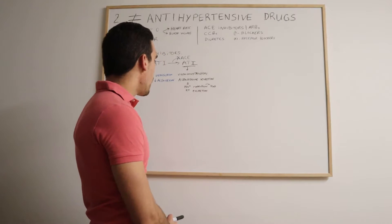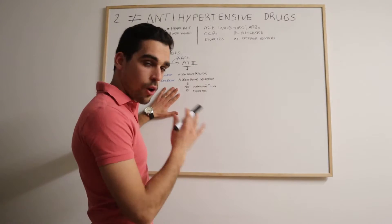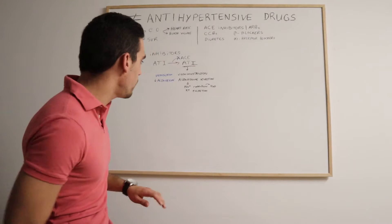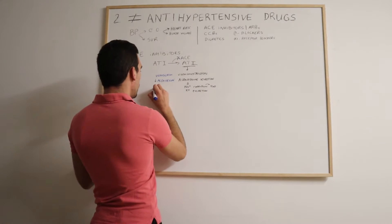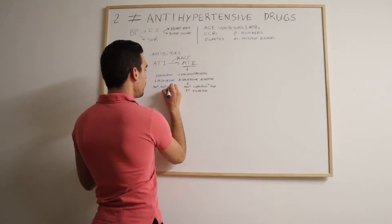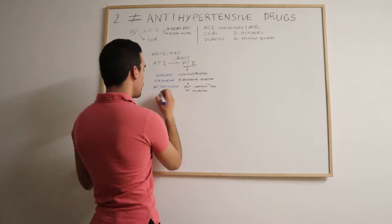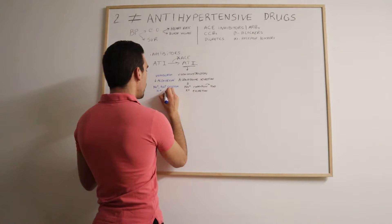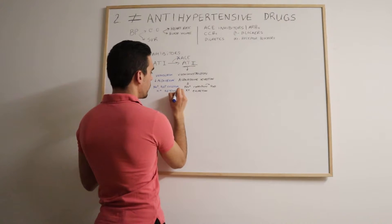If we have the opposite effect with ACE inhibitors, we'll have sodium and also water excretion as well as potassium retention. We'll have the opposite effect.